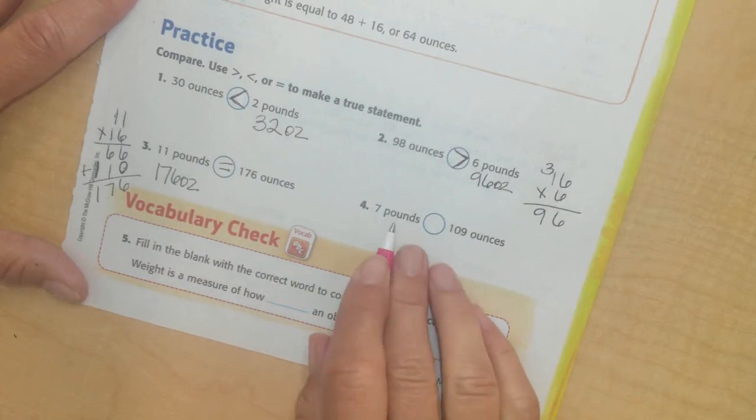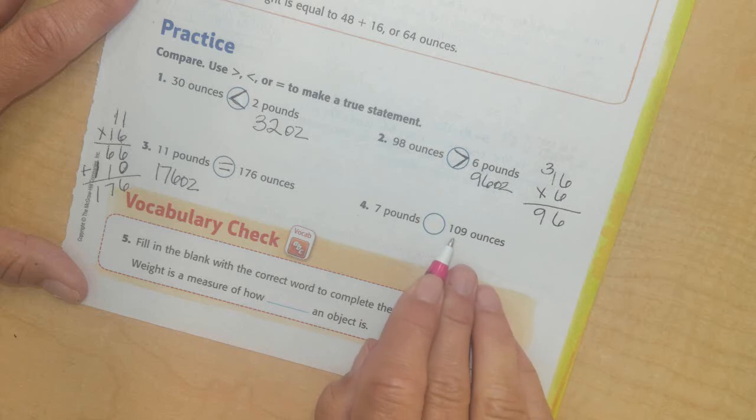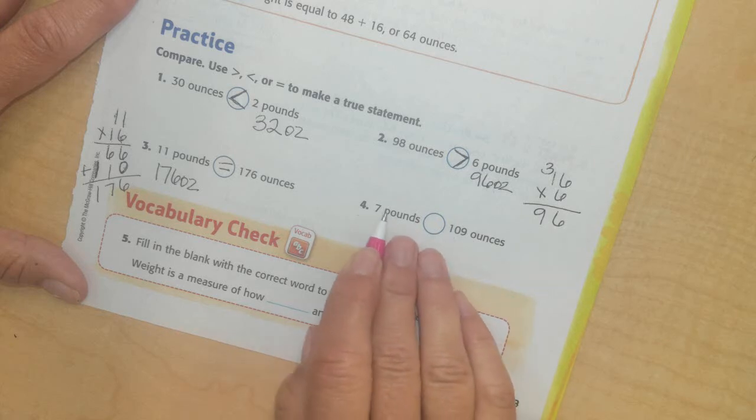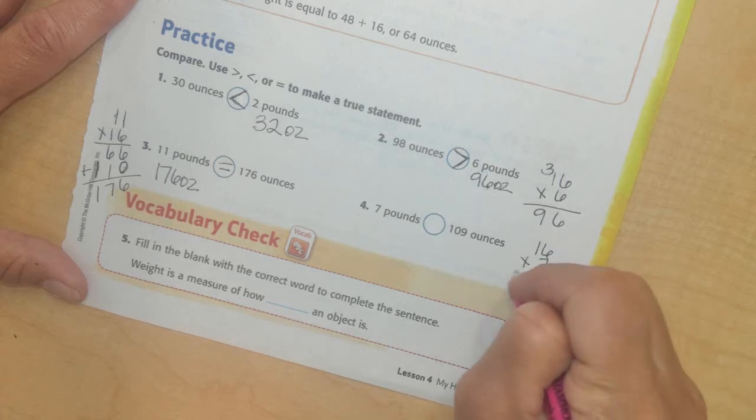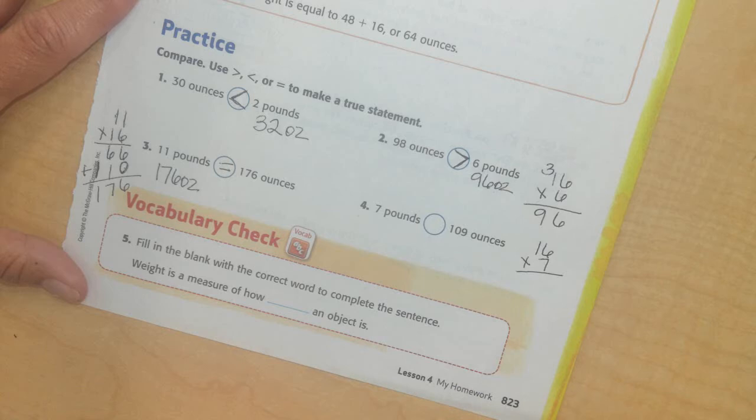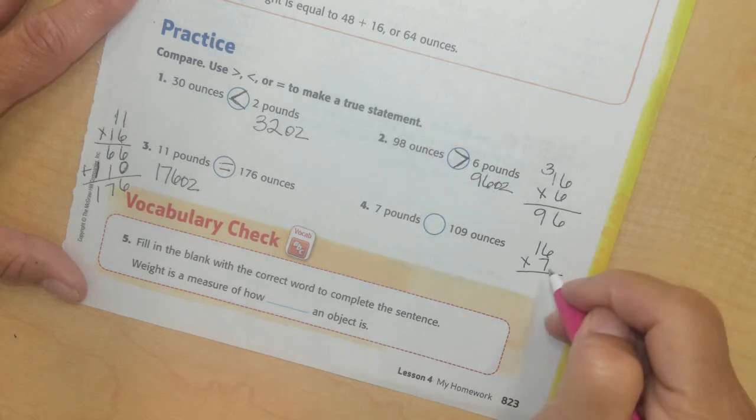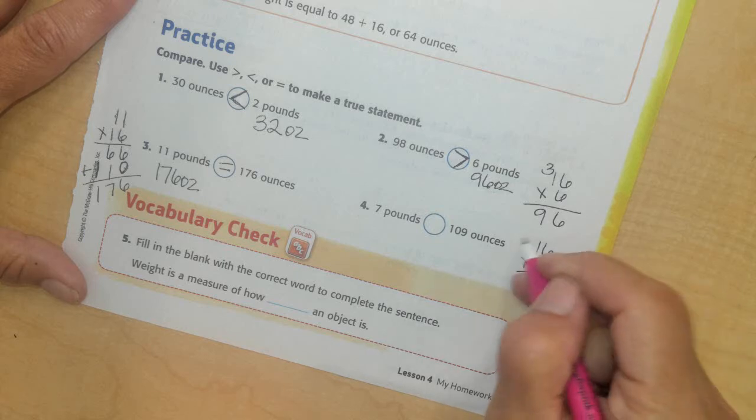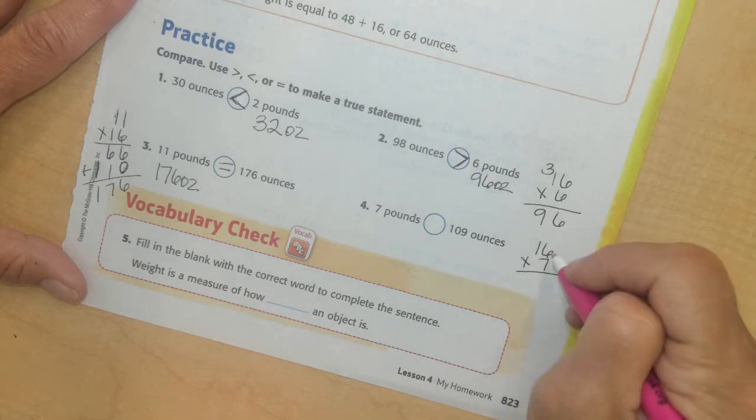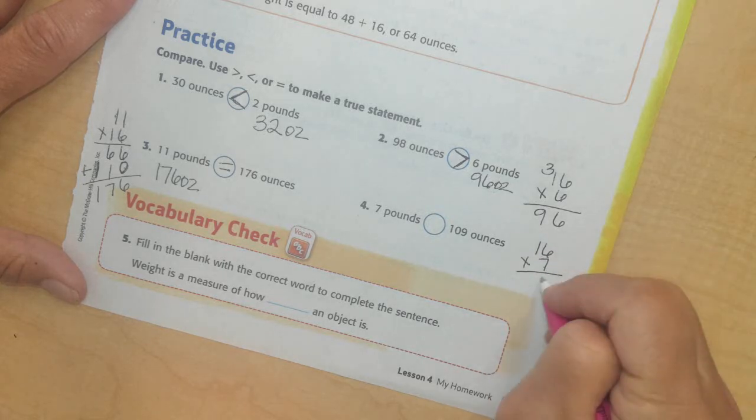Alright, now I have 7 pounds or 109 ounces. So I'm going to multiply 7 times 16. I'll do it over here. I'm going to put the 16 on top. I like to have the double digits on top. If I only have a single digit times a double digit, I'll put the more digits on the top number.